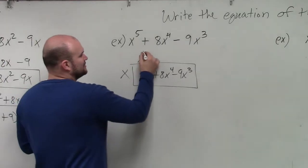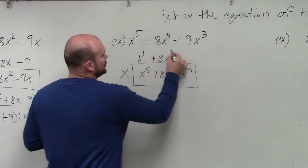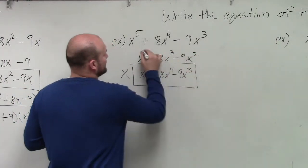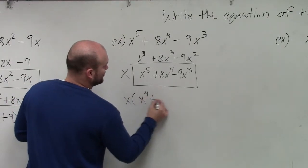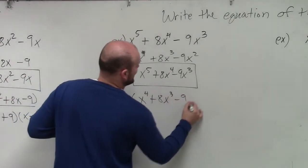If you factor out x, you get x times x to the fourth plus 8x cubed minus 9x squared. Right? So it's x times x to the fourth plus 8x cubed minus 9x squared.